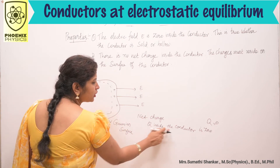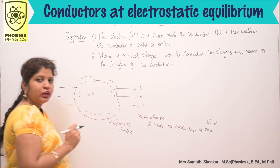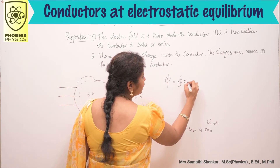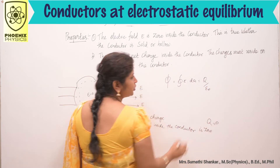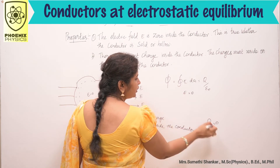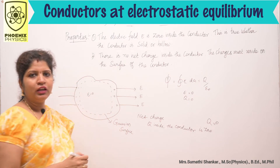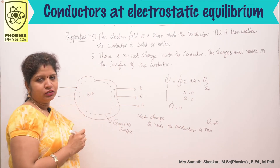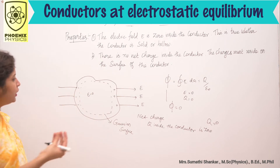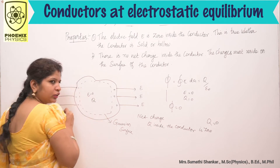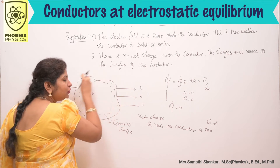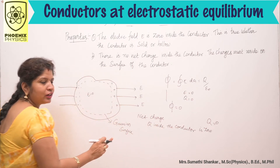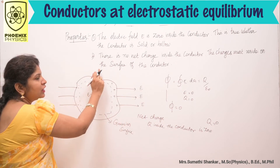Inside the Gaussian surface, there is no net charge, or we can say the net charge inside the conductor is 0, which means Q = 0. By Gauss's law, φ = ∮E·dA = Q/ε₀. Since E = 0 inside the conductor and Q = 0, the electric flux φ = 0. This is our second property. Suppose you introduce excess charge inside the conductor — immediately it reaches the surface of the conductor. So we conclude: E = 0, Q = 0 inside the conductor, and electric flux φ = 0.